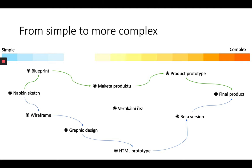When doing your prototypes, you should start from simple to more complex. For a physical product, you start with a napkin sketch, then a blueprint, then a mockup, then a prototype, and finally a finished product. For new software or a website, you always start with a basic napkin sketch, then do wireframes, create a graphic design, an HTML prototype, a beta version, and then end up with a final product.